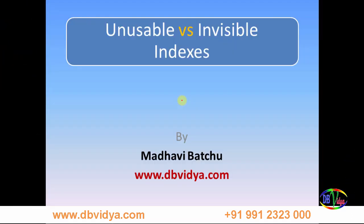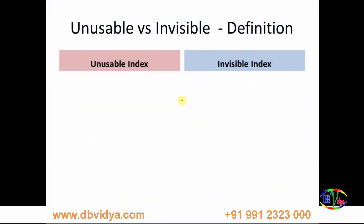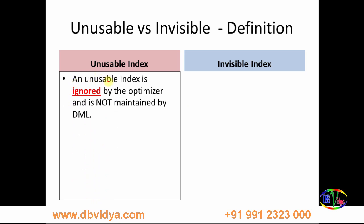In this session we are going to discuss the differences between unusable indexes and invisible indexes with respect to Oracle 12c. First, coming to unusable indexes: an unusable index is ignored by the optimizer and is not maintained by DML — meaning when insert, update, or delete happens, the unusable index is not considered by the optimizer and statistics are not maintained.